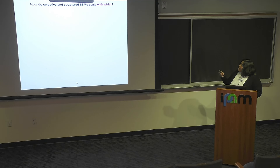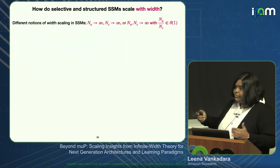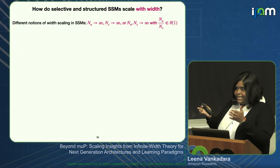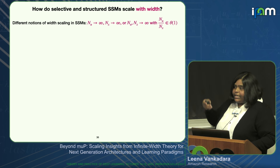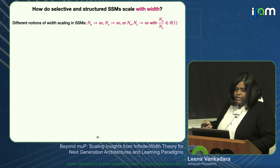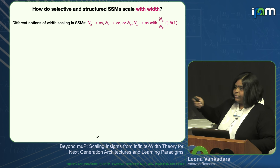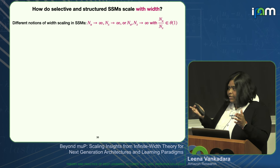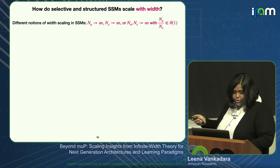The key question we're interested in: how do selective and structured SSMs scale with width? For SSMs there are different notions of width—the state dimension and the input dimension to the SSM. Here thankfully the limits commute, so we take the general case where both N_X and N_U are taken to infinity at the same rate. We update the SSM parameters with SGD, using standard Gaussian initialization with variances σ_B², σ_C², and corresponding learning rates, and A has the HIPPO parameterization.